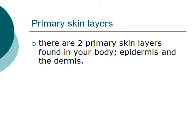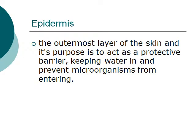In a general sense, there are two primary skin layers. We are going to talk about one in detail in this lecture. The two primary skin layers are called the epidermis and the dermis, and we'll look at both more thoroughly later in this course. The epidermis is the outermost layer of the skin, and its purpose is to act as a protective barrier, helping keep water in and preventing microorganisms from entering your body.